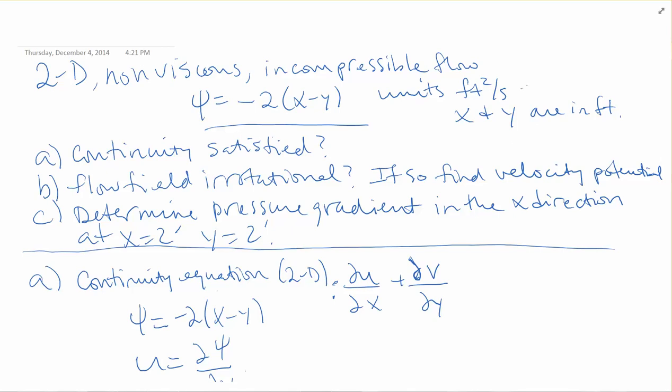Our questions: we want to figure out if continuity is satisfied, and if the flow field is irrotational. If it is irrotational, we need to find the velocity potential — remember, velocity potential is phi. After that, we want to determine the pressure gradient in the x direction at the location where x equals 2 and y equals 2.